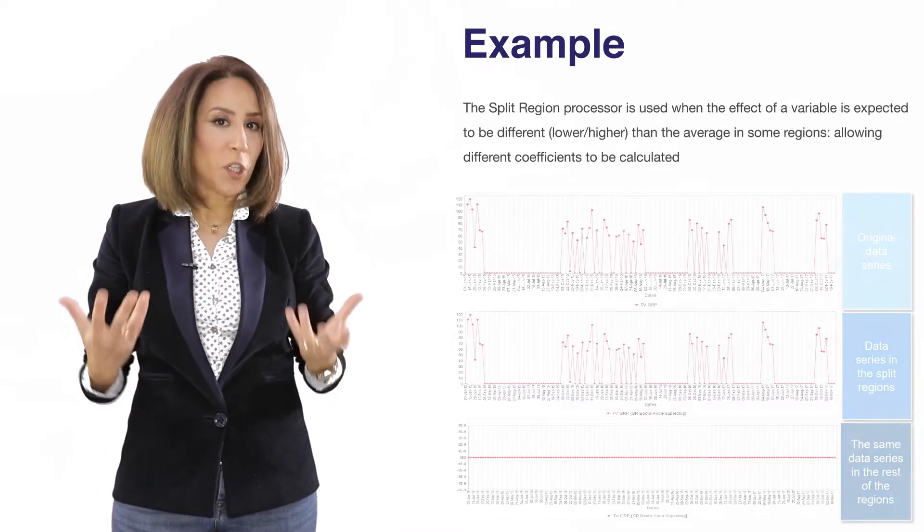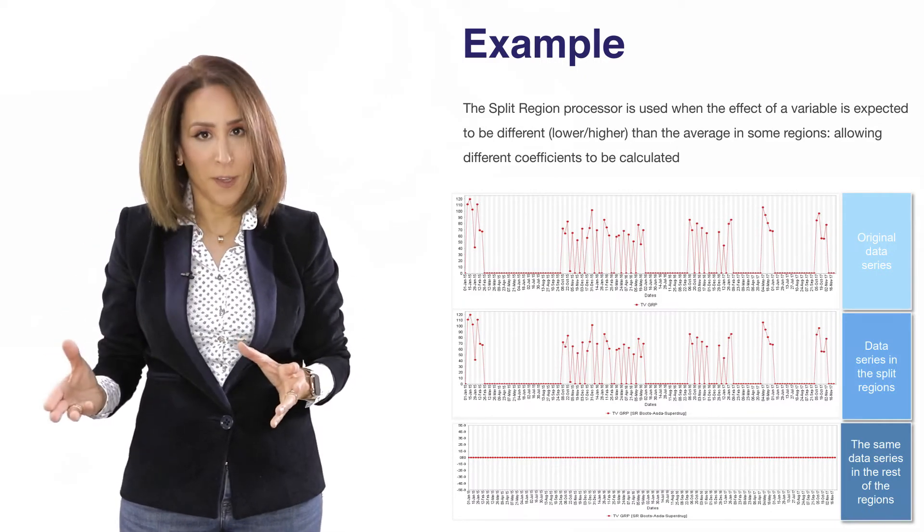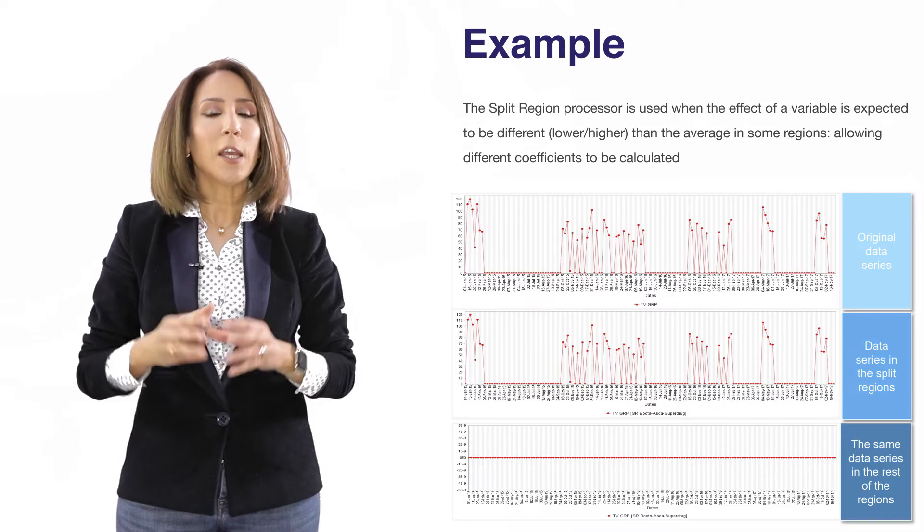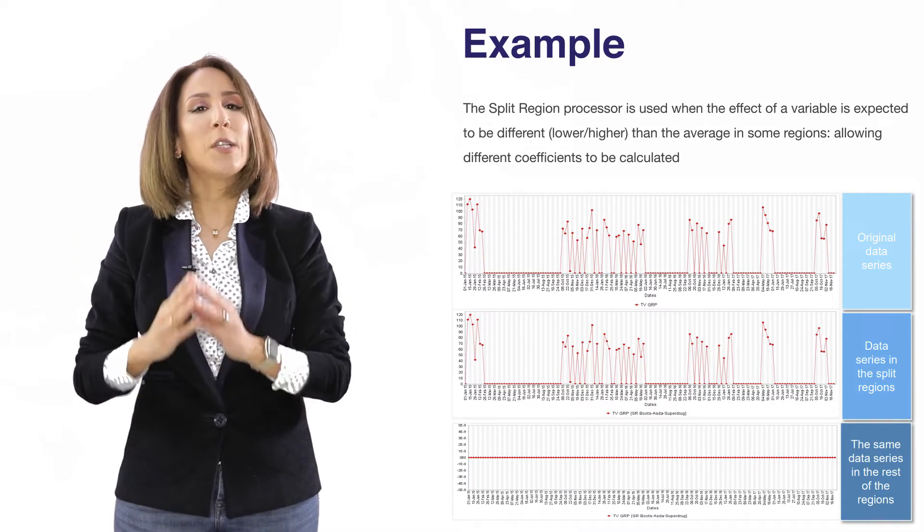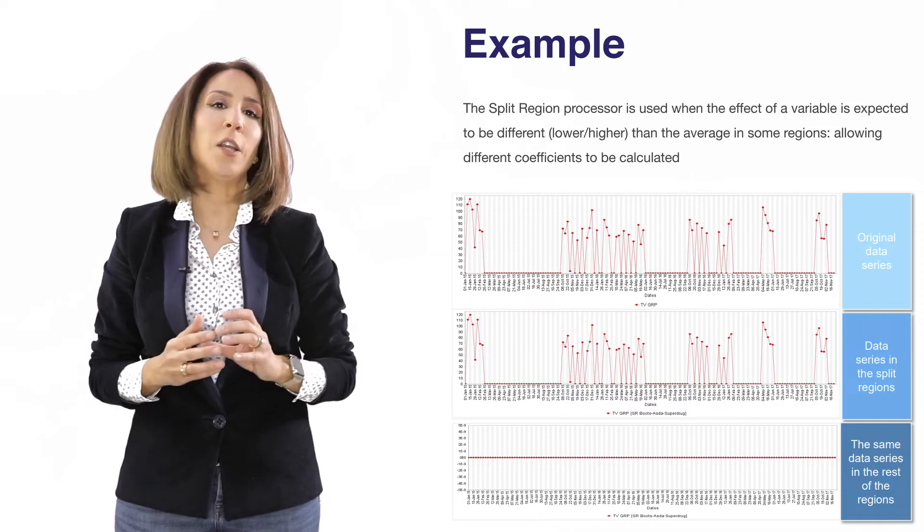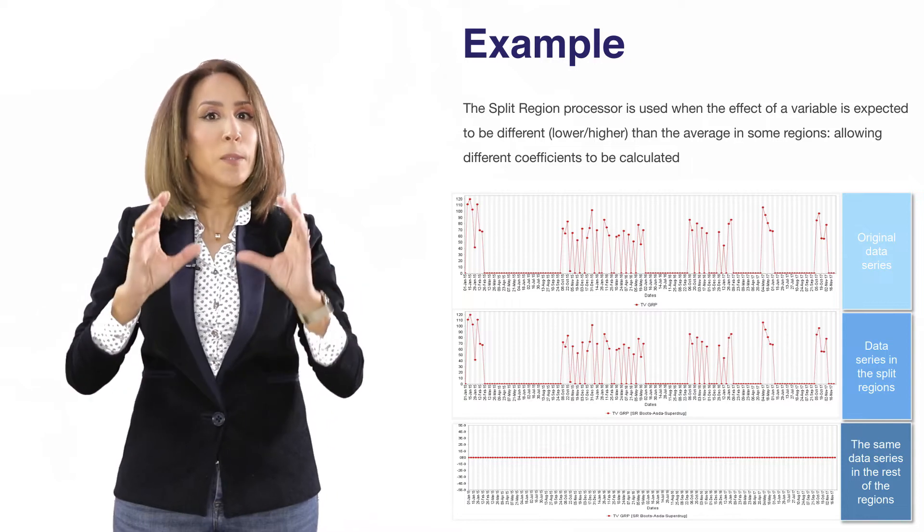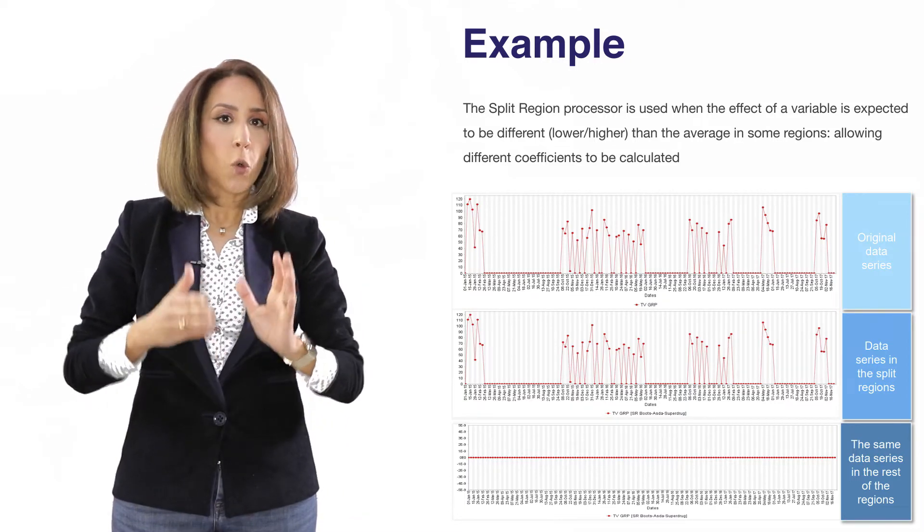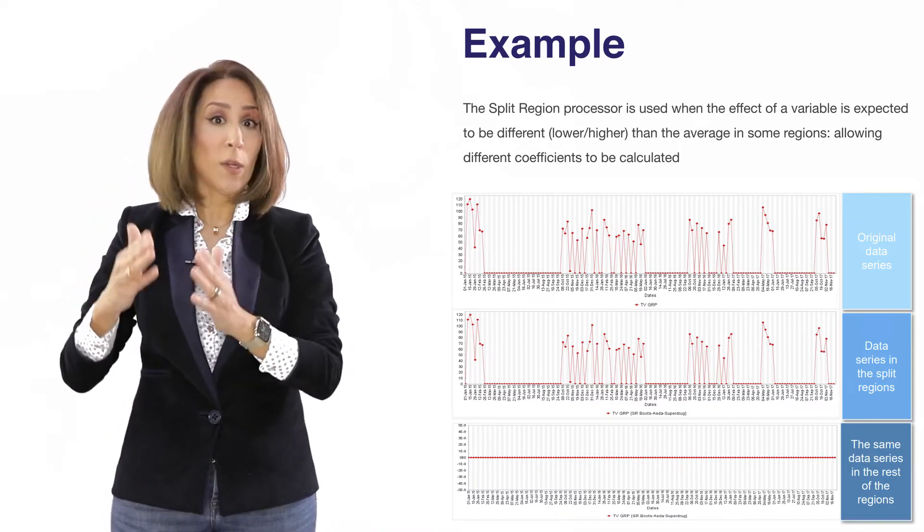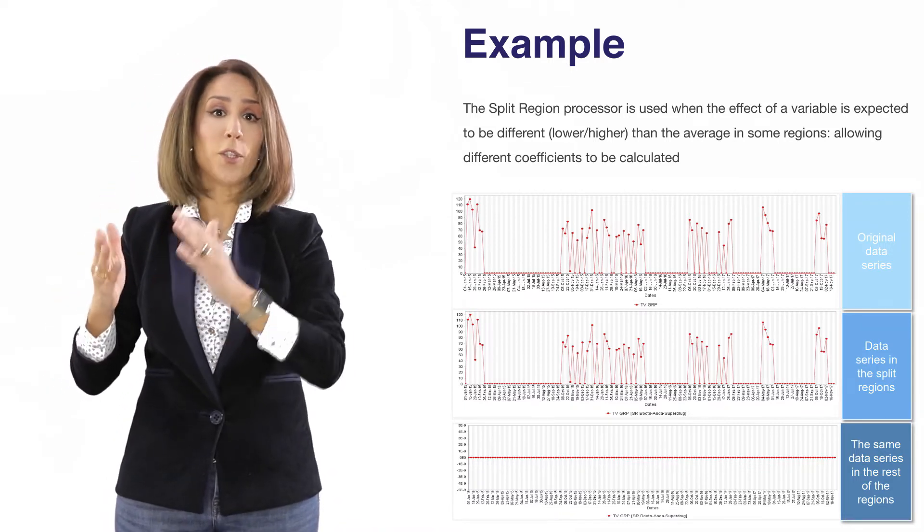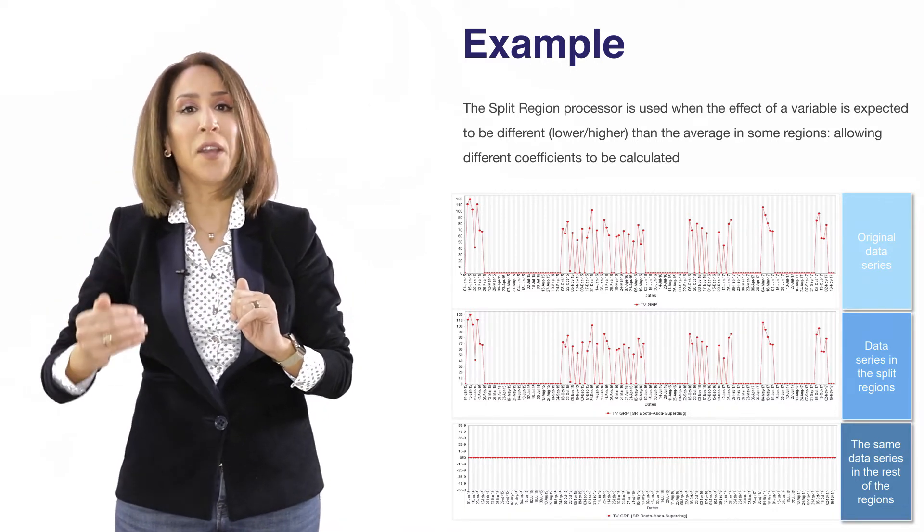When we use the split region processor, what technically happens is that we create an additional variable. For example, if we have a price variable that takes values across all the regions and we suspect that in the north region the price should have a different sensitivity than the other regions, we may decide to split that region. So this means that we'll be creating another variable that will have price values for the north region and will have zeros for all the other regions.